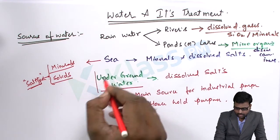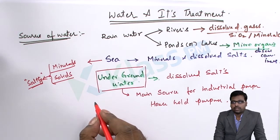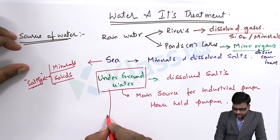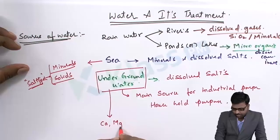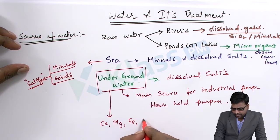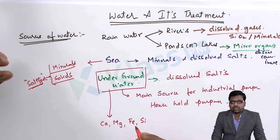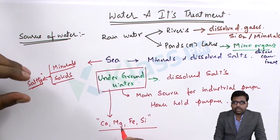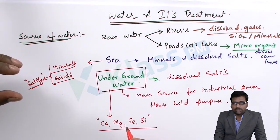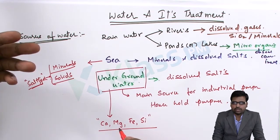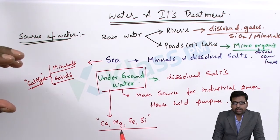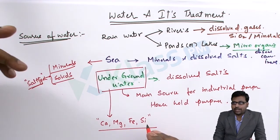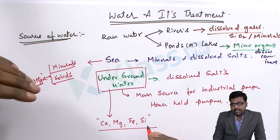Underground water contains solids or salts which include calcium, magnesium, iron, and sometimes dissolved salts of silica. This calcium and magnesium enters the groundwater as rainwater flows onto the surface ground. The rainwater is filtered through the surface layers of the earth's crust and goes into the earth's layers.